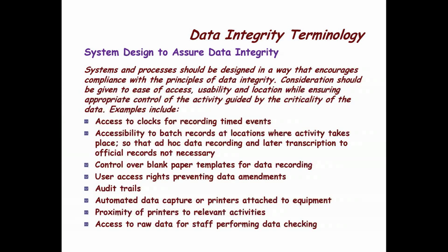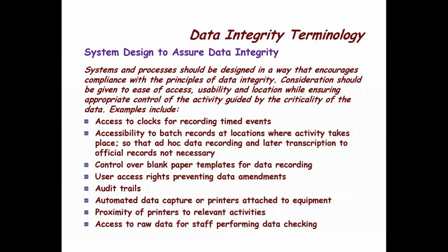If you're checking data you also have to have access to the raw data. When QA does the batch record review, it's not sufficient to get just a certificate of analysis from the lab — they need the raw data with all the chromatograms and all the printouts, so QA can do a second- or third-person check.